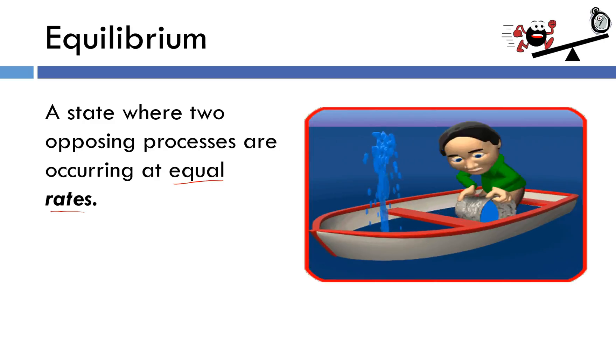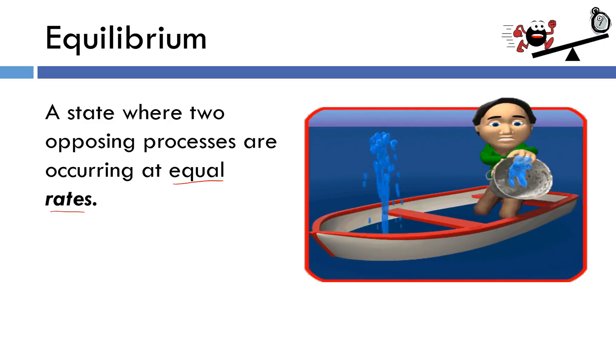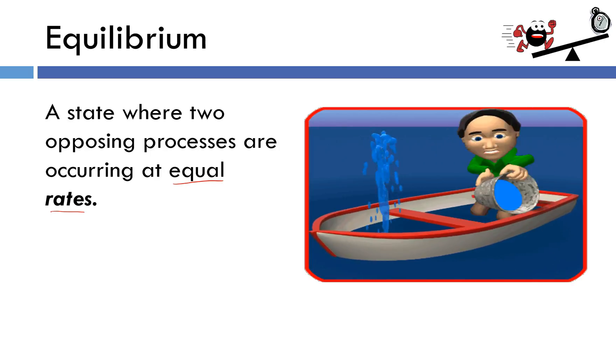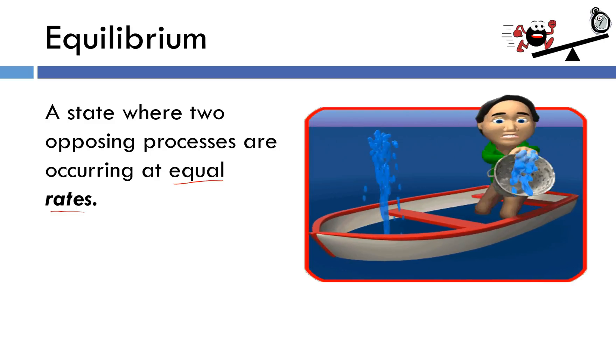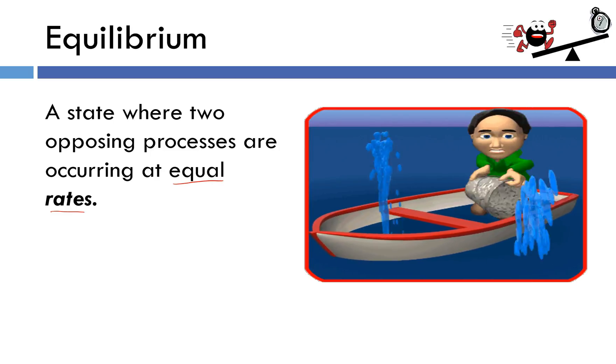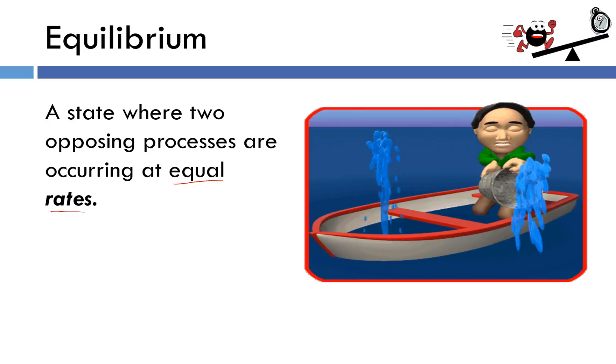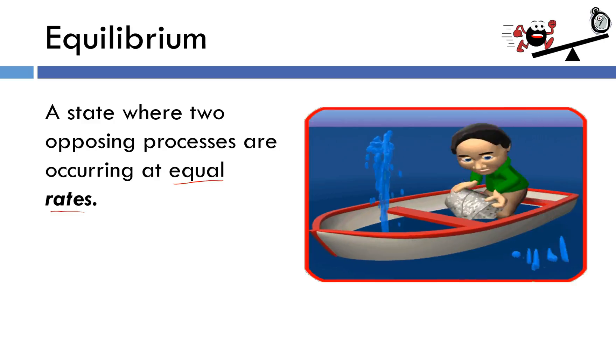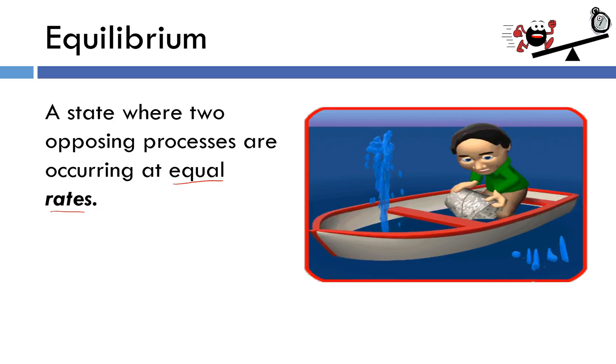Let's look at an example that has nothing to do with chemistry first. When you take a look at this picture or this gif, hopefully it's pretty obvious what the two opposing processes are. We've got this guy bailing water out of the boat using the bucket, and then we have water coming into the boat, presumably through a hole in the bottom of the boat. I know these processes are opposite of one another because one's bringing water into the boat, the other is putting water out of the boat. How can I tell if they're occurring at equal rates?